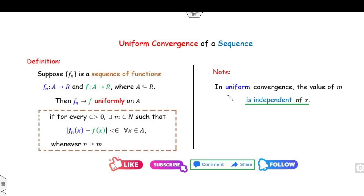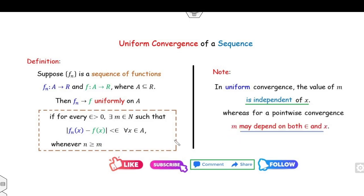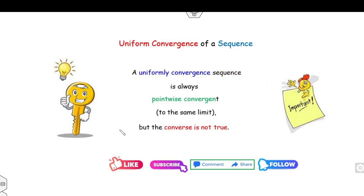In uniform convergence, the value of m is independent of x. However, in pointwise convergence, m is dependent on both epsilon and x. In uniform convergence, m depends only on epsilon. Also note that uniform convergence always implies pointwise convergence — if you prove a sequence is uniformly convergent it is automatically pointwise convergent, but the converse need not be true.